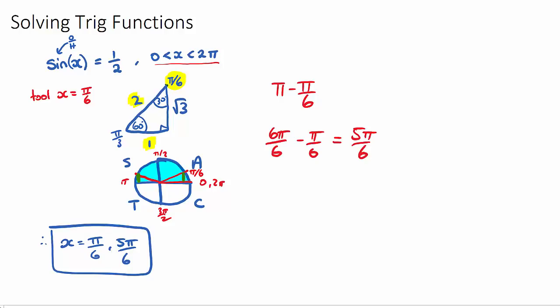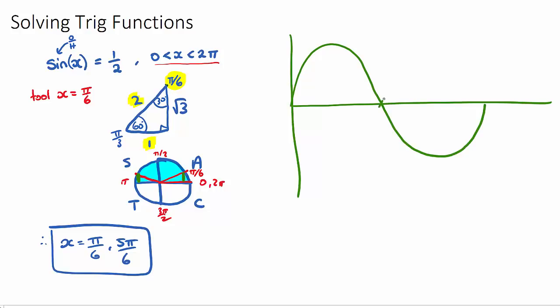I am just going to quickly draw what the graph looks like and how we can picture this if it was a graph. So a sine of x function just simply looks like this, where this would be π, this would be 2π, this here would be π/2, this here would be 3π/2.